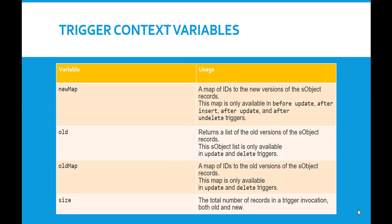The size context variable returns the total number of records in a trigger invocation, including both old records and new records. It gives you the total number of records involved in a trigger invocation, whether they are old or new.